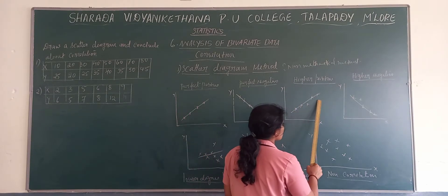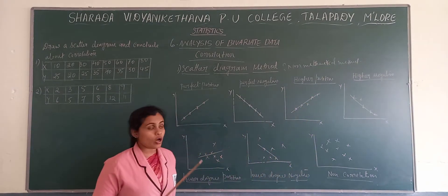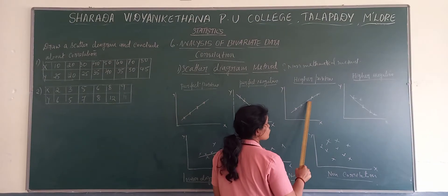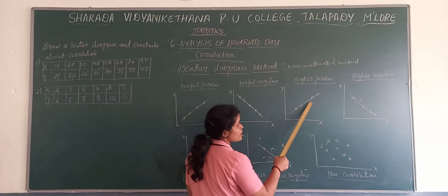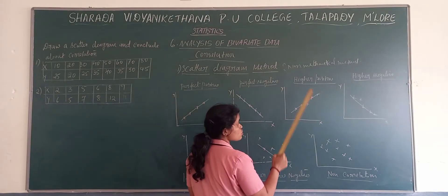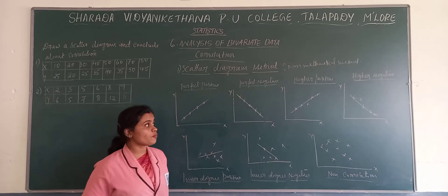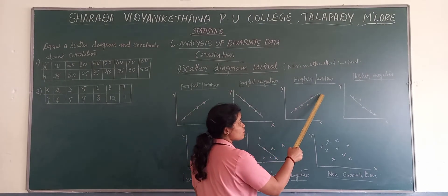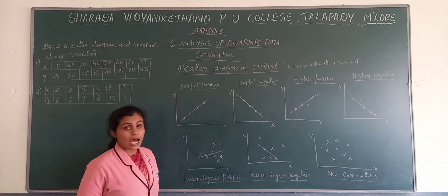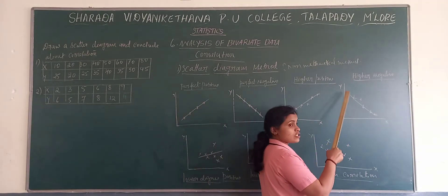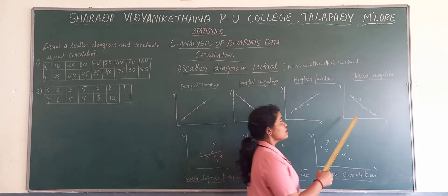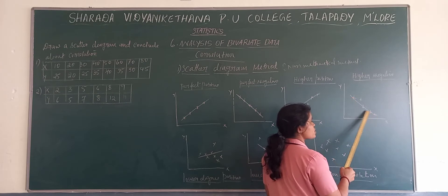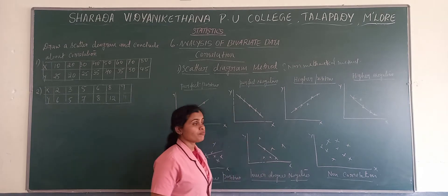For higher positive correlation, where the path formed by the dots is close to the plotted points, it is said to be higher positive. The positive or negative nature depends upon the direction. Where the plotted points are close to the path, it is higher negative. Positive means direction from upper right-hand corner to lower left-hand corner; negative means upper left-hand corner to lower right-hand corner.